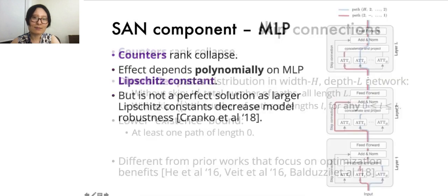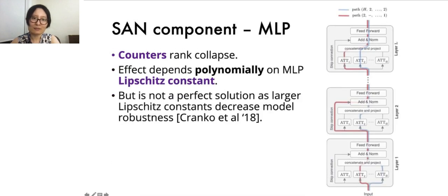Another mechanism that counters rank collapse is the MLP, as nonlinearities often increase the rank of their input. We found that this counteracting effect depends polynomially on the MLP Lipschitz constant.